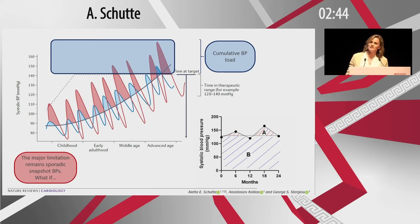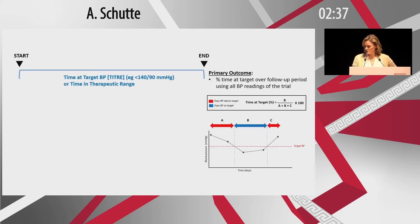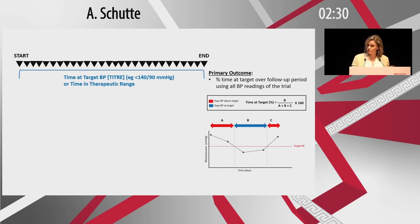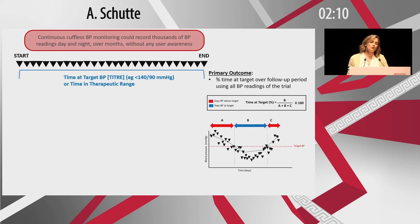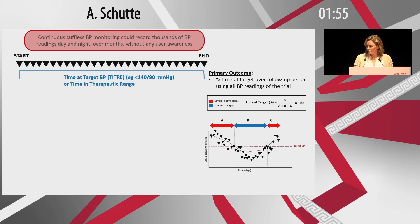The major limitation of all these techniques is that they still rely on sporadic snapshot blood pressures. One wonders if there could be a different way — having blood pressures measured continuously, not only at five or so specific times, but throughout the entire trial. This would allow much better calculation of time at target if blood pressures were taken day and night over, say, six months. This is the great promise of continuous blood pressure monitoring with cuffless devices, where measurements can be taken without patient awareness, day and night, for weeks and months, providing reliable results for primary study outcomes.